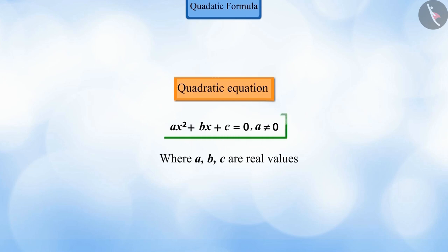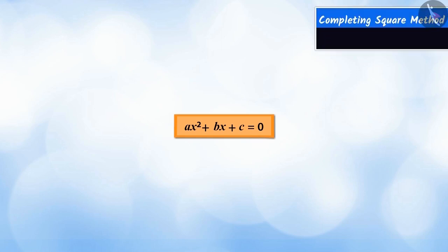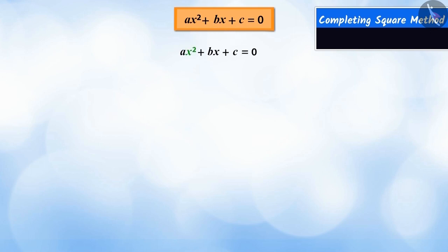We know that this is a general form of the quadratic equation. To solve this equation by completing the square method, first, we divide the equation by a to make the coefficient of x to the power 2 as 1.